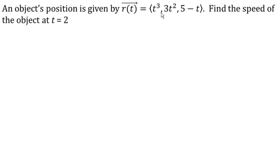An object's position is given by this function here, and we want to find the speed of the object at time 2. Now remember that speed is going to be the magnitude of the velocity function.